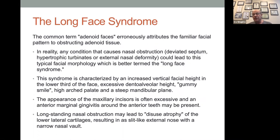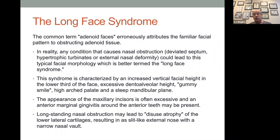The term 'long face syndrome' or 'adenoid facies' is what we see from adenoid tissue, but everybody doesn't get the same problem. Not everyone has adenoids or tonsils — they could have deviated septums, hypertrophic turbinates, or external nasal deformity. You should always look at the nares because sometimes you'll see kids whose nares are almost completely closed. Basically you see vertical excess facial height in the lower third of the face, a big gummy smile, and a narrow high arch instead of a wide flat arch.